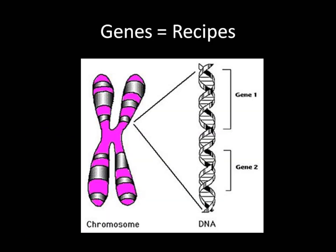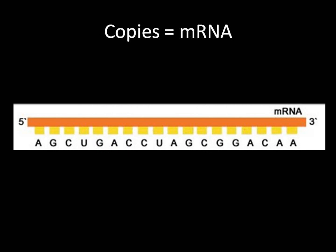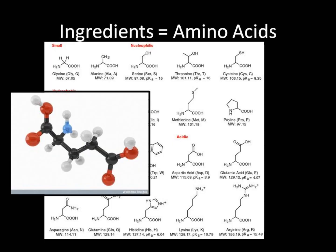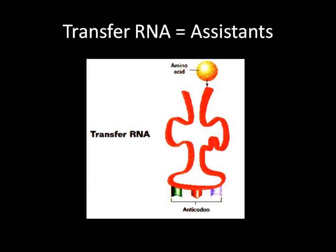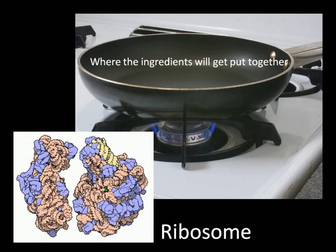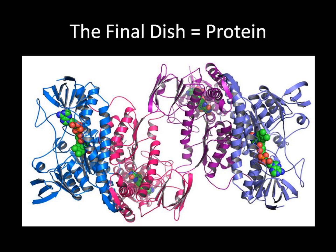Let's review the basics right now. To build a protein, we need a recipe, and our genes are our recipes. Rather than risk damaging our original genes in this complex process, we must copy the genes by creating messenger RNA. That recipe will tell us how to put the ingredients together, and for a protein, those ingredients are called amino acids. Those amino acids are carried around by assistants called transfer RNA. Everything gets assembled at the ribosome, and we finally get our final dish — the protein.